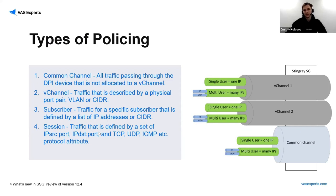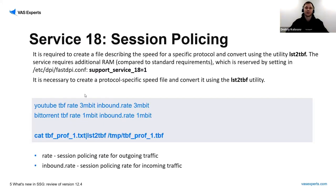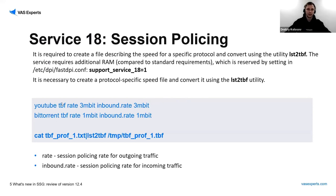Recently we added a new feature named session policing. Now we can do traffic policing at the session level, which is defined by a set of IP source port, IP destination port, TCP, UDP, and ICMP. Here is an example of how to configure it in our file to limit YouTube, for example, to three megabits outgoing and three megabits incoming traffic. Note that this feature requires more RAM compared to standard requirements. Here is a description of the configuration — once we make this setup, we need to convert it to SSG understandable format through this utility.